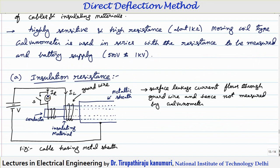The galvanometer should be highly sensitive, and a high resistance moving coil type galvanometer is used for measurement of high resistance. The power supply used is either a battery or a constant voltage DC supply of 500 volts to about 1 kilo volt.